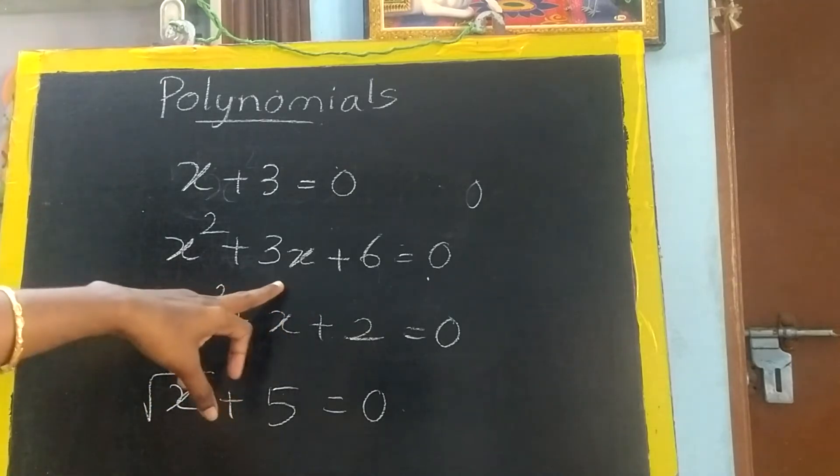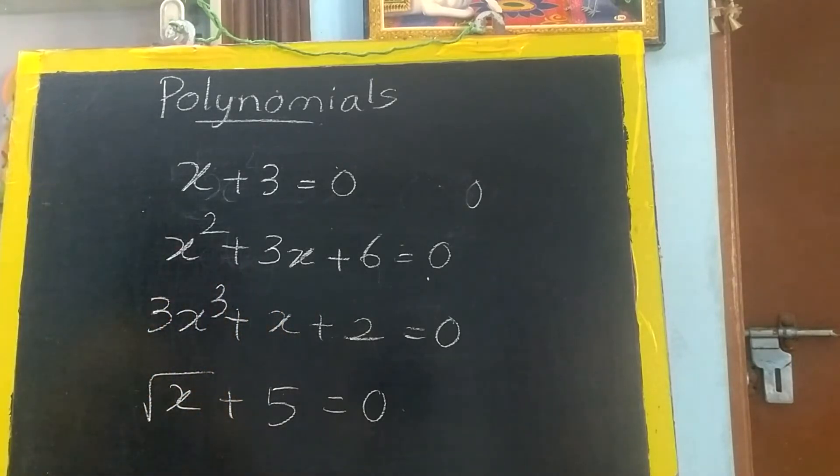Now here you see the highest degree. This is 1 but this is 2. So this is having 2. So this polynomial has degree 2. This is called as quadratic. Quadratic equation will start with square only, right? So when the degree is 2, it is called as quadratic.